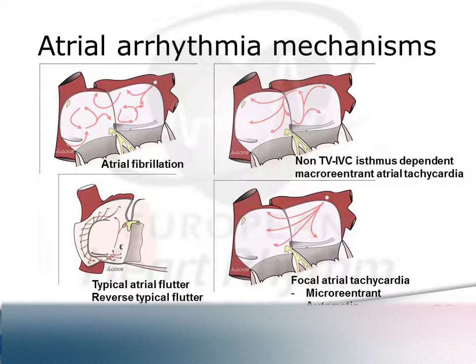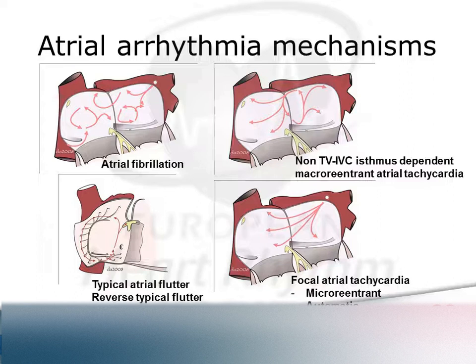Because it's focal, the entire mechanism of the tachycardia is located in a very small area — perhaps less than 2 centimetres, though that's an arbitrary cut-off. It doesn't mean the mechanism is automaticity, because it could just as easily be re-entry — a very small or micro-re-entrant circuit.